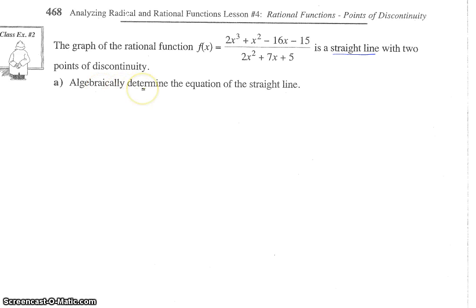So, part A, algebraically determine the equation of the straight line. So we have to divide these. Now, we could use synthetic division, or we could use long division, but what we could do first is factor that denominator to make sure we have one of the factors, and then divide it in. Okay? So, why don't you guys pause the video and go ahead and factor that with whatever method works for you, either my funky weird modified decomposition or guess and check, whatever works. Okay, pause the video, please.